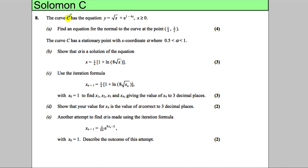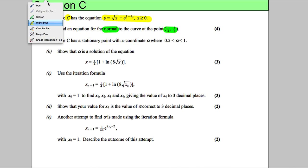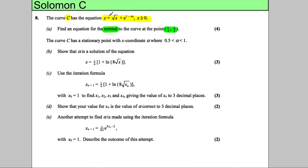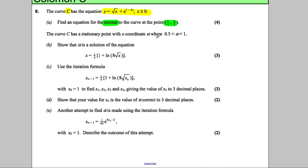In this question we're given a curve C with equation y equals the square root of x add e to the power of 1 subtract 4x, where x is greater than or equal to 0. We need to find the equation of the normal to the curve at a given point, so we're going to differentiate to find the gradient of the tangent and then find the equation of the normal.